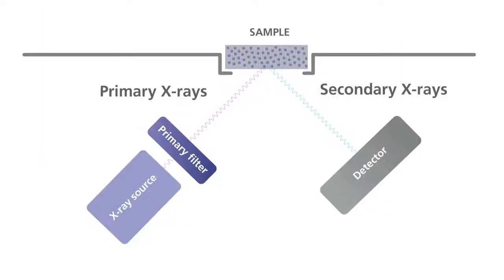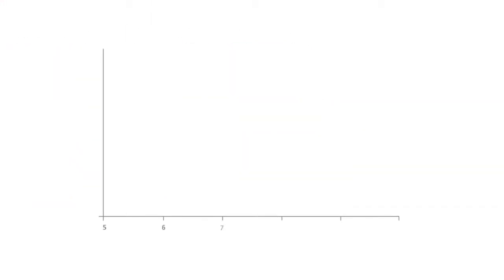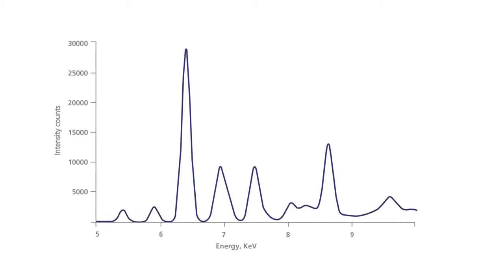The X-rays emitted by the atoms in the sample are collected by a detector and processed in the analyzer to generate a spectrum showing the X-ray's intensity peaks versus their energy.